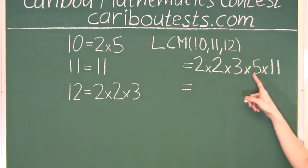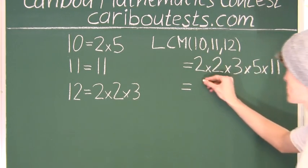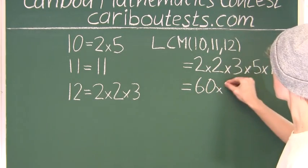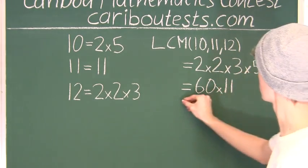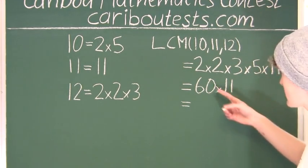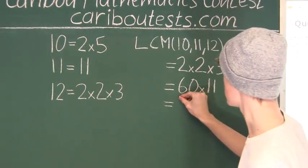So 2 times 5 is 10, 2 times 3 is 6, 10 times 6 is 60, and then we have times 11. And 11 times 60 is 660, because 10 times 60 is 600, and 1 times 60 is 60, giving us 660.